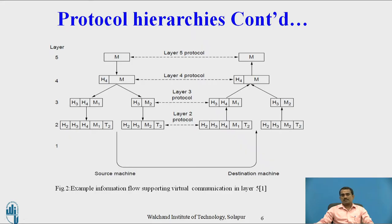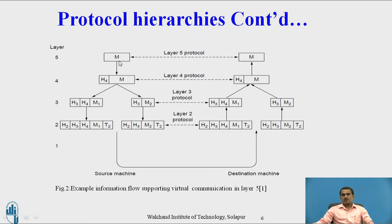This block diagram shows actual data transmission — how layers interface and what they add. This diagram illustrates information flow supporting virtual communication between layers. Layer 5 wants to transfer the message M to the receiver side. The message passes from layer 5 to layer 4. Both layers are interfaced. After interfacing, layer 4 adds its own header information — H4 — which indicates header information about the fourth layer.